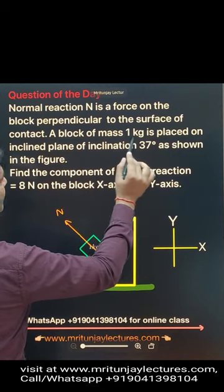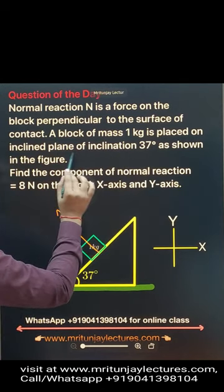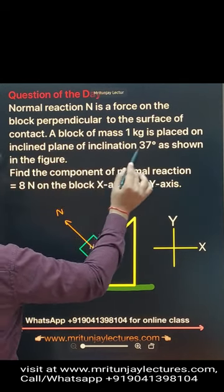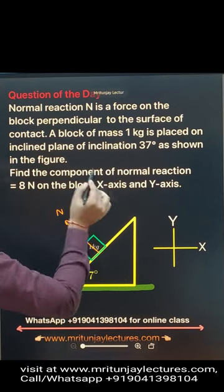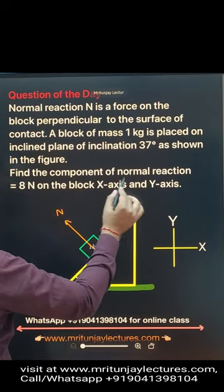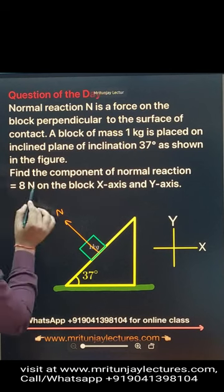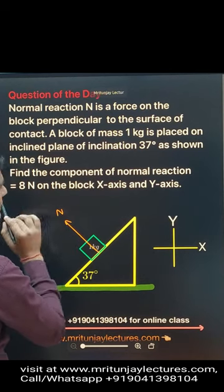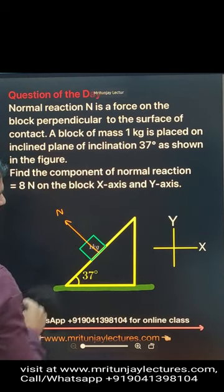A block of mass 1 kg is placed on an inclined plane of inclination 7 degrees, as shown in the figure. Find the components of the normal reaction on the block along the x-axis and y-axis.